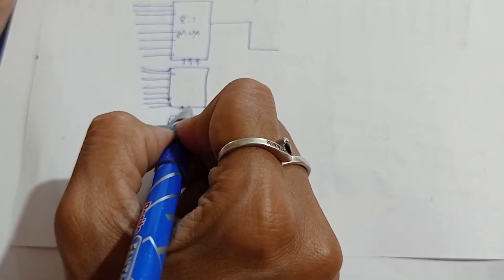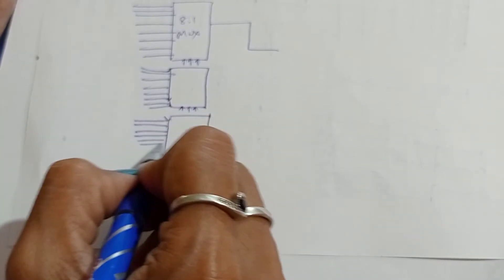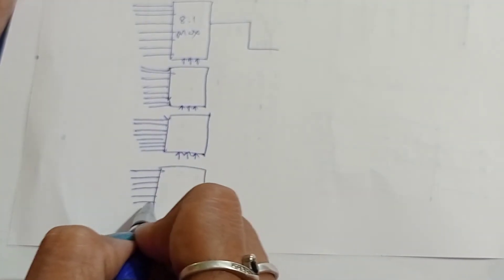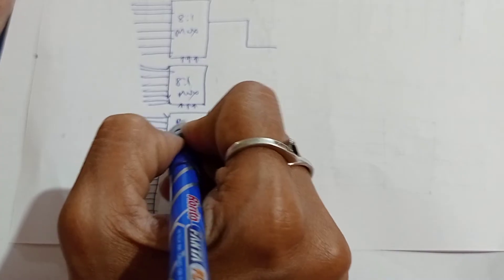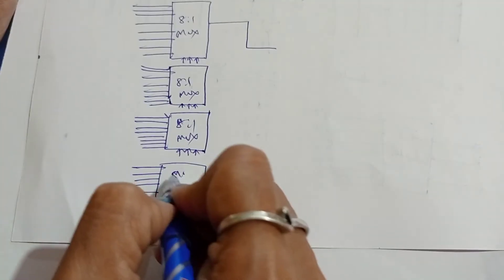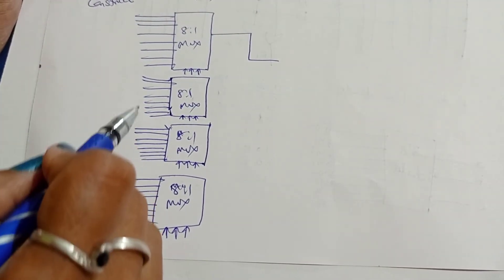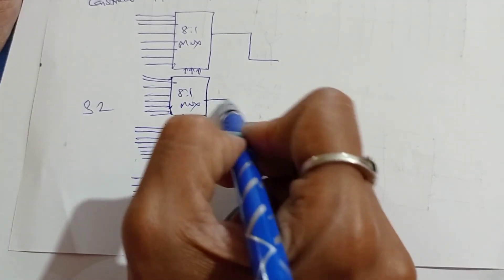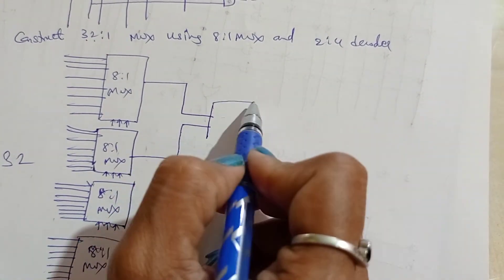Each 8 is to 1 MUX has 3 control inputs A, B, C and 8 data inputs, numbered 1 through 8. With four such MUX units, we get 8 plus 8 plus 8 plus 8, totaling 32 inputs. So we now have all 32 inputs covered.